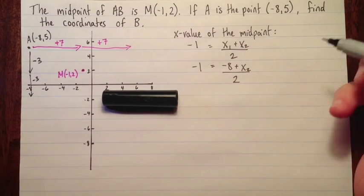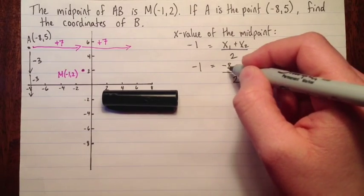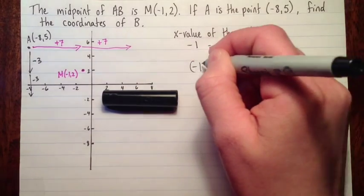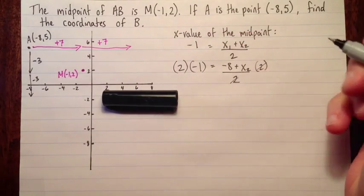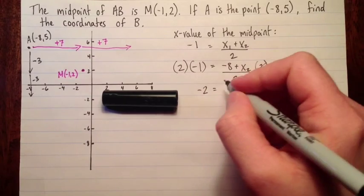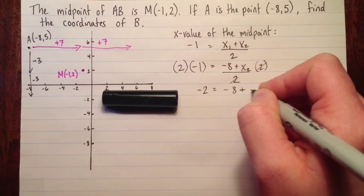And now I've got just a nice little linear equation there. There's only one variable, so I can solve this pretty easily. I'd like to isolate x2, so to get rid of that dividing by 2, I'll multiply both sides by 2. And that simplifies. So on the left I have negative 2. On the right I have negative 8 plus x2.